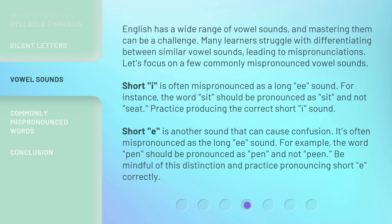Short 'E' is another sound that can cause confusion. It's often mispronounced as the long 'EE' sound. For example, the word 'pen' should be pronounced as 'pen,' and not 'peen.' Be mindful of this distinction and practice pronouncing short 'E' correctly.